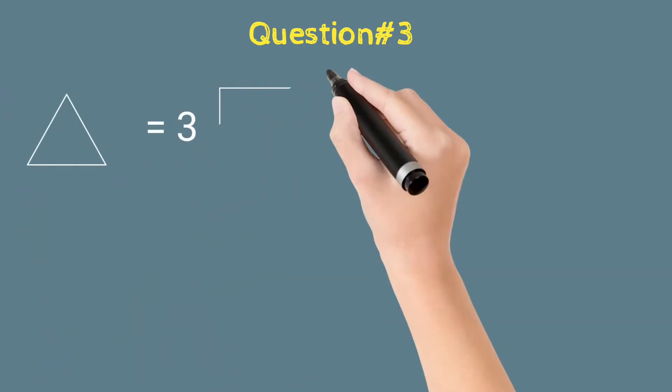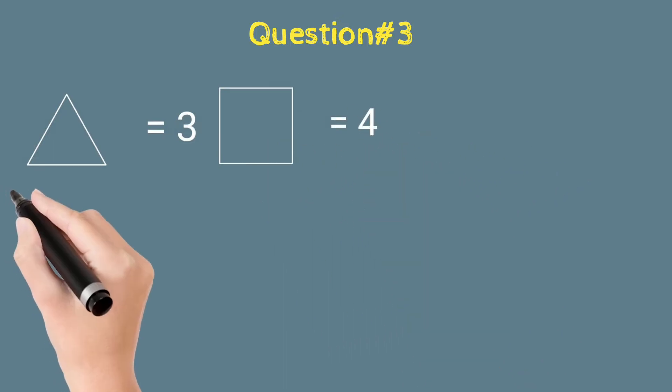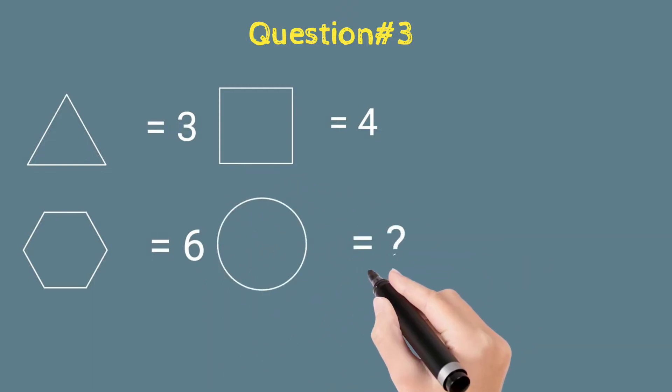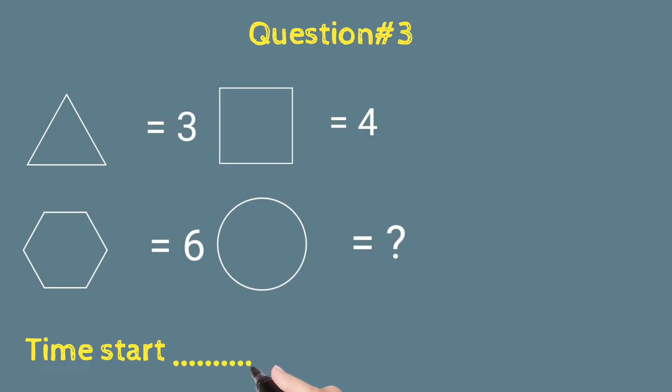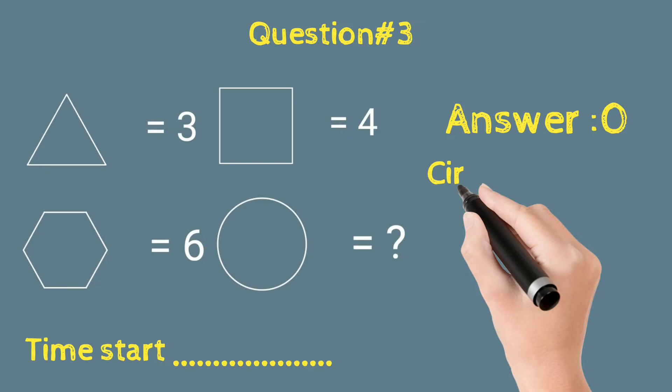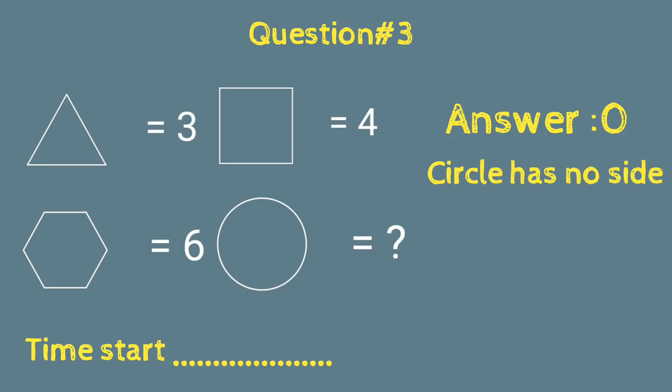This is the figure. Triangle equals to 3, rectangle equals to 4, and this is hexagonal, and this is the circle. So what will the circle be equal to? Time starts now. And the answer will be zero because the circle has no sides.